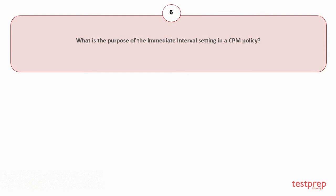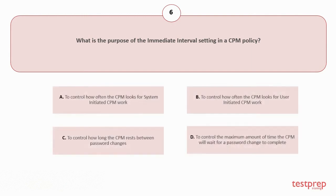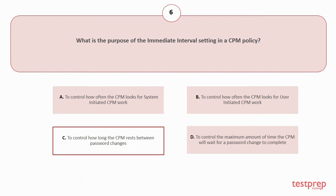Question number 6: What is the purpose of the immediate interval setting in a CPM policy? Your options are: A. To control how often the CPM looks for system-initiated CPM work. B. To control how often the CPM looks for user-initiated CPM work. C. To control how long the CPM rests between password changes. D. To control the maximum amount of time the CPM will wait for a password change to complete. The correct answer is option C.